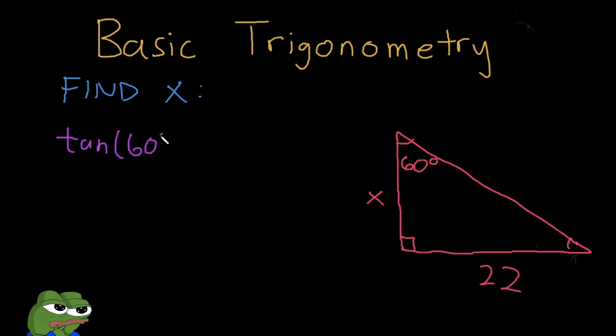So tangent of our angle 60 degrees is equal to the opposite side, which is 22, over the adjacent side, that's x. We do the same process as earlier where x tangent 60 degrees equals 22, and then you divide both sides by tangent 60. So 22 over tangent 60, and you get 12.702.